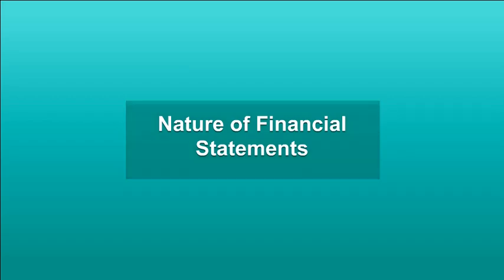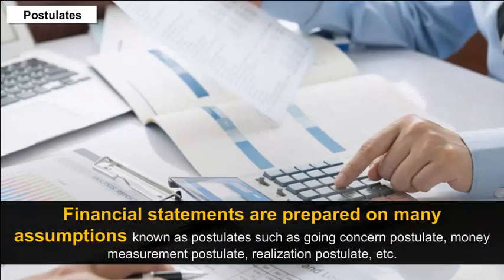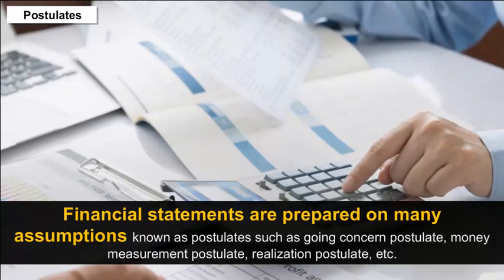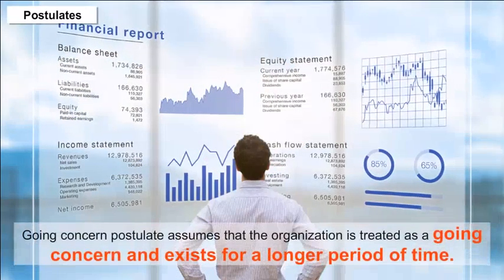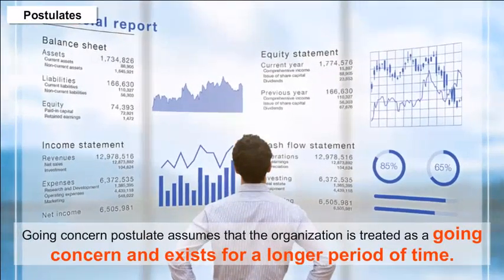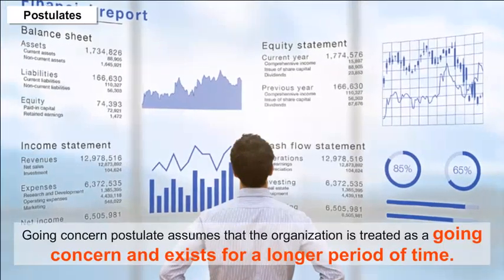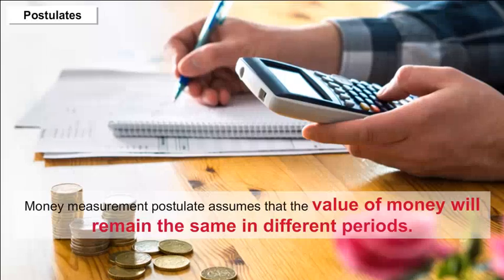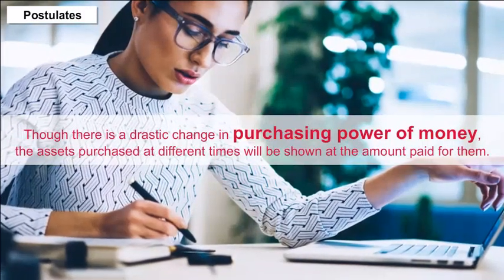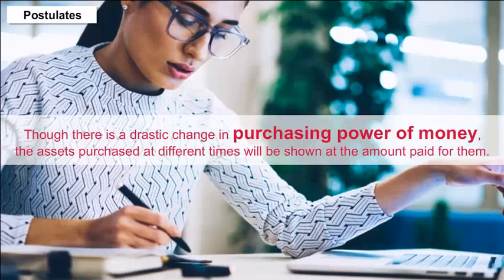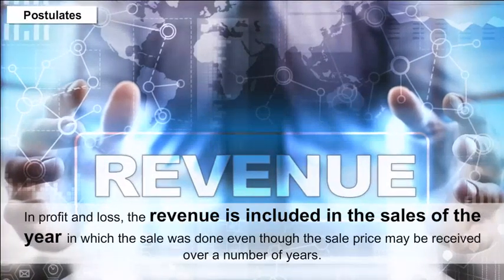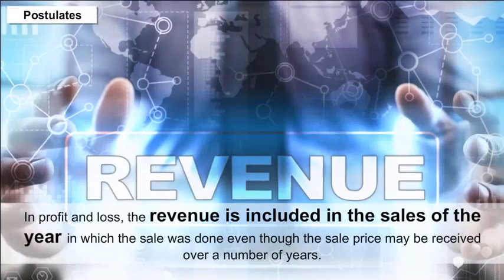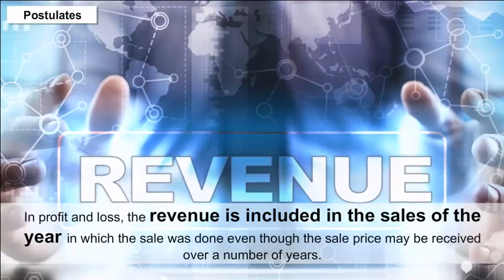Financial statements are prepared on many assumptions known as postulates, such as the going concern postulate, money measurement postulate, and realization postulate. The going concern postulate assumes that the organization is treated as a going concern and exists for a longer period of time. The money measurement postulate assumes that the value of money will remain the same in different periods, though there is a drastic change in purchasing power of money. The assets purchased at different times will be shown at the amount paid for them. In profit and loss, the revenue is included in the sales of the year in which the sale was done, even though the sale price may be received over a number of years — this assumption is known as the realization postulate.